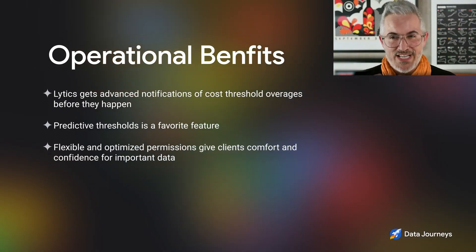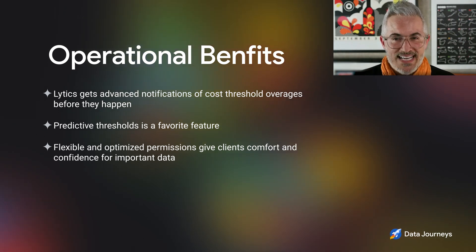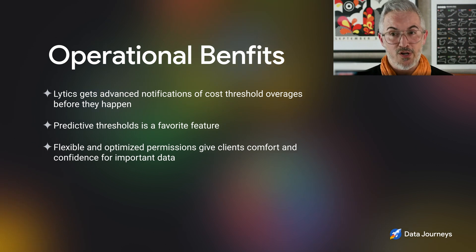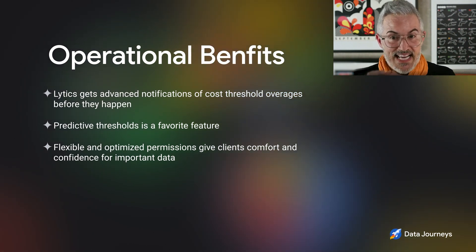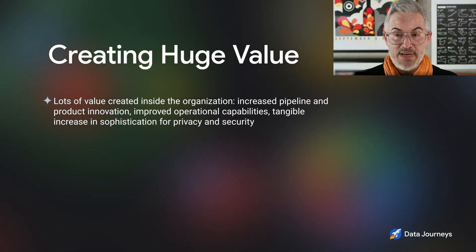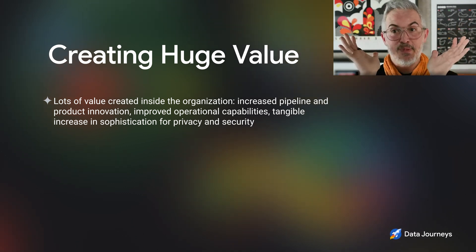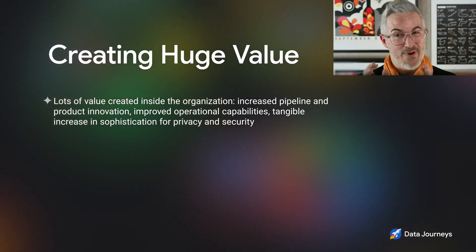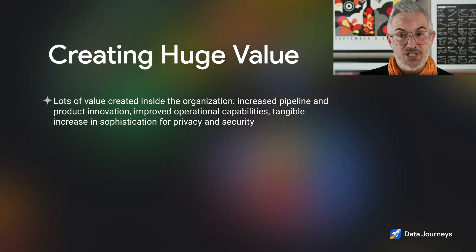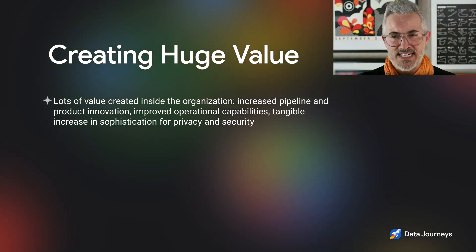So we hit product innovation, talked about operational cost savings and specific features. There are some other aspects that I also think are pretty interesting. There are some flexible permissionings that are packaged together now. We've been able to optimize the processes needed to give clients access to projects — our enterprise clients in particular — at the dataset, the table, and even the row and column level, giving our clients comfort and confidence that the right permissionings are in place for important and private data to have the right access points.